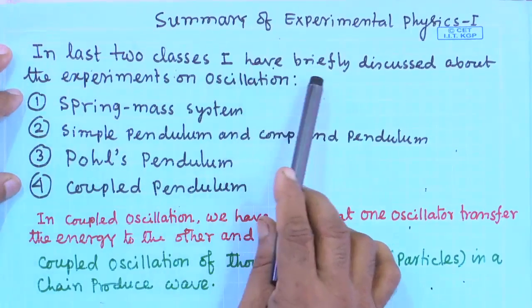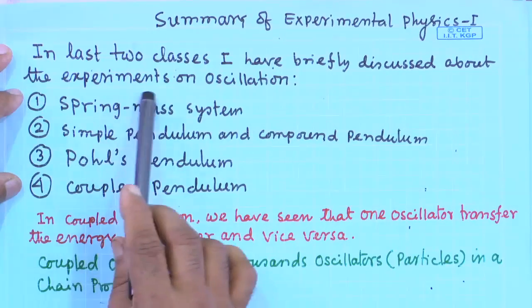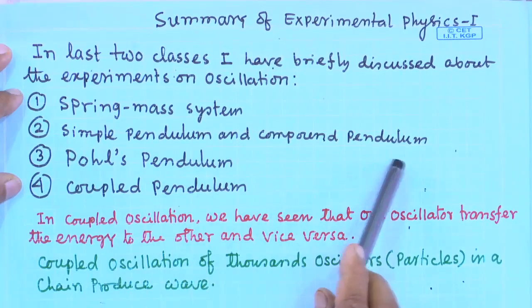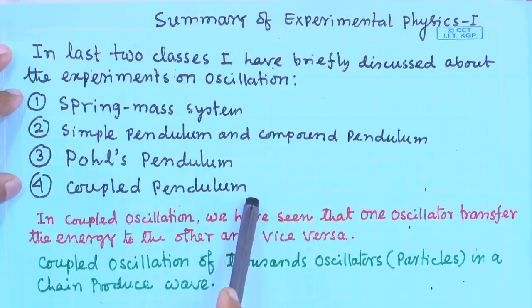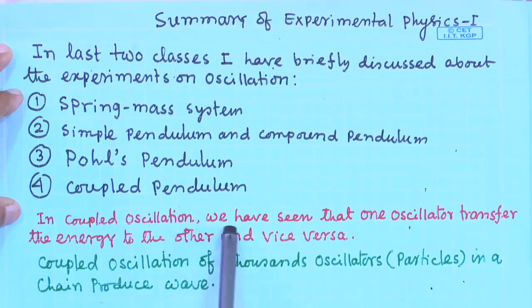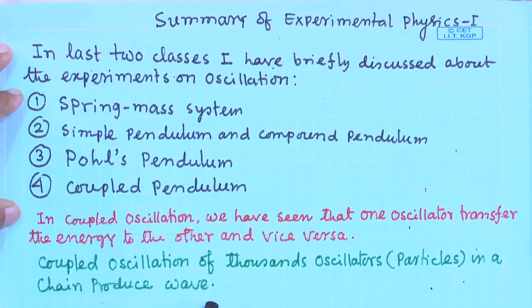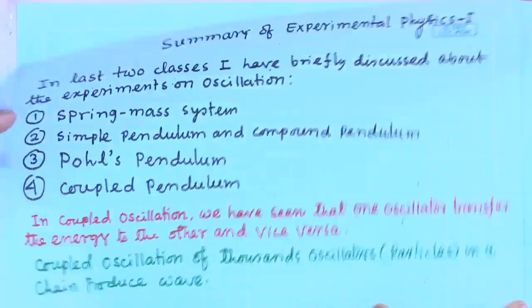Let us continue the summarizing of Experimental Physics 1. In the last two classes, I have briefly discussed about the experiments on oscillation - basically spring mass system, simple pendulum, compound pendulum, Pohl's pendulum, and coupled pendulum. In coupled oscillation, we have seen that one oscillator transfers the energy to the other and vice versa. Coupled oscillation of thousands of oscillators together in a chain basically produces waves. So let us now see the wave experiments also demonstrated in Experimental Physics 1.